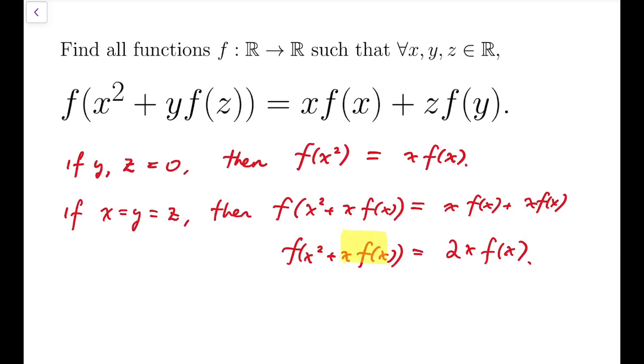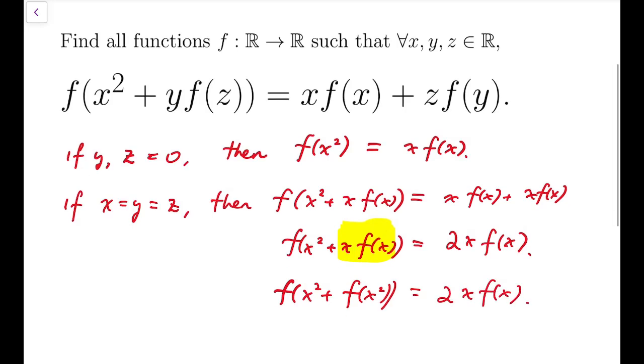Which means f of x squared plus x times f of x equals to 2x times f of x. Now we can replace this part, this x times f of x inside the bracket, by f of x squared. Then this would become f of x squared plus f of x squared, so double f inside, equals 2x f of x.